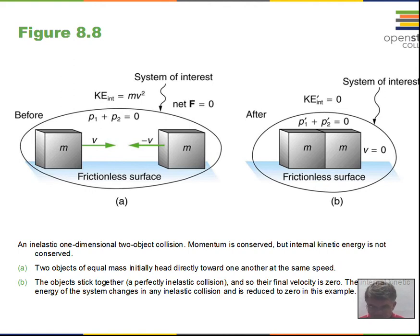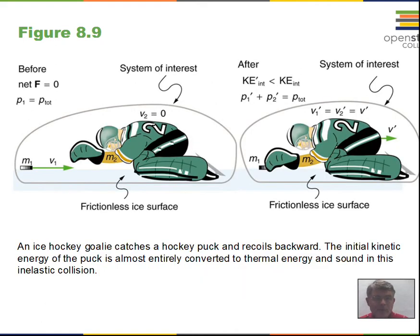It's just: find MV individually for the two masses before the collision. After the collision, you use the sum of the masses as the mass in the MV calculation.